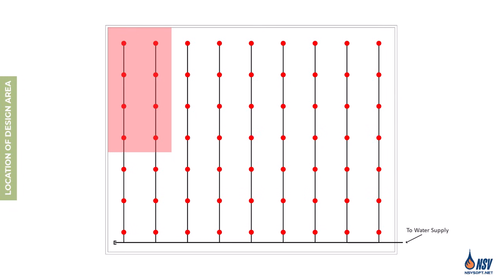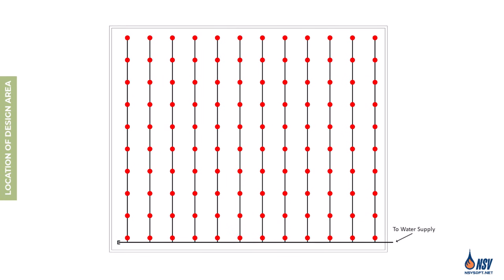Most of the time, this remote area is simply the farthest point from the water supply. However, in some cases, a section closer to the supply may become hydraulically remote, especially if it has a higher hazard classification or if the sprinklers cover a larger area resulting in greater water demand.